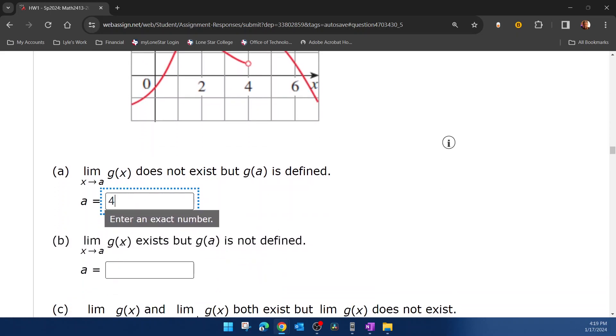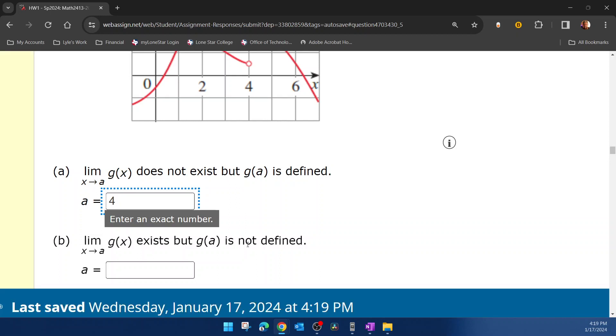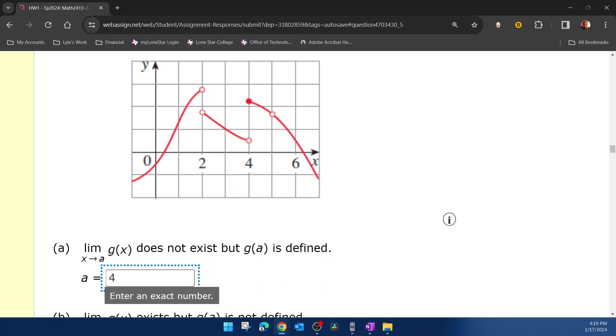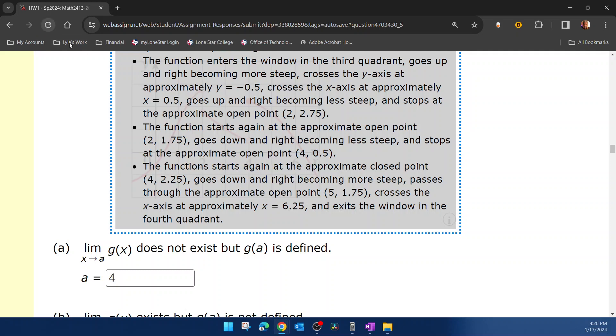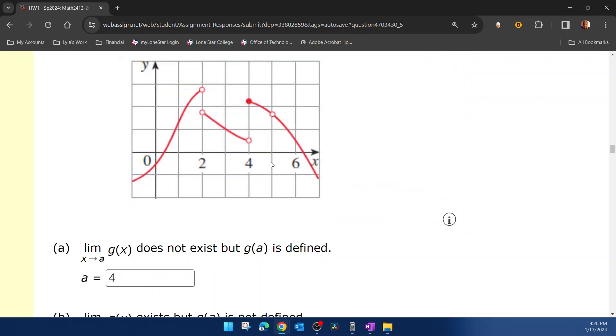Part b, now we want a value of a where the limit does exist, but the function value doesn't. Okay? And that is looking like 5. Here we can see that there is a hole in the graph. So f of 5 is not defined because nowhere along x equal 5 up and down do I see a solid dot. So the function value doesn't exist.